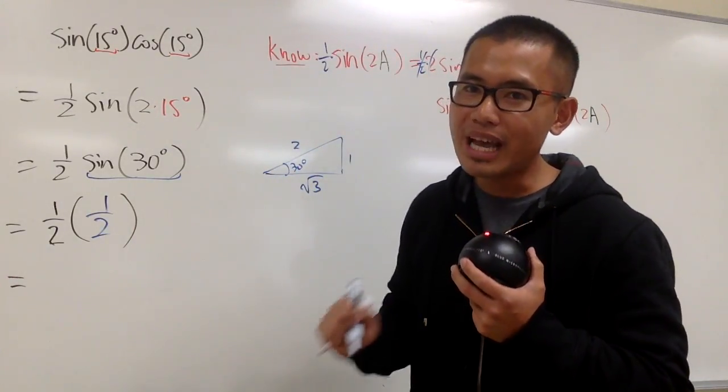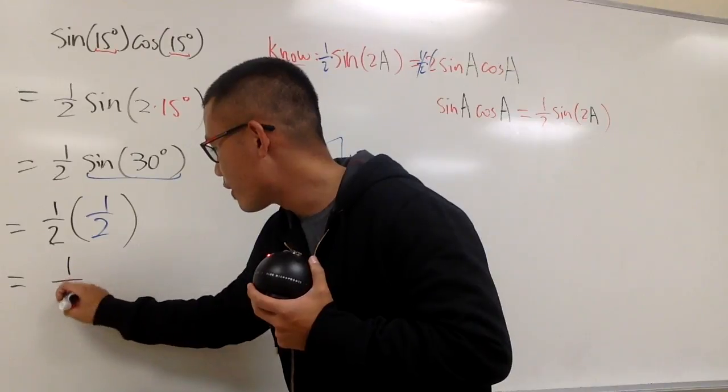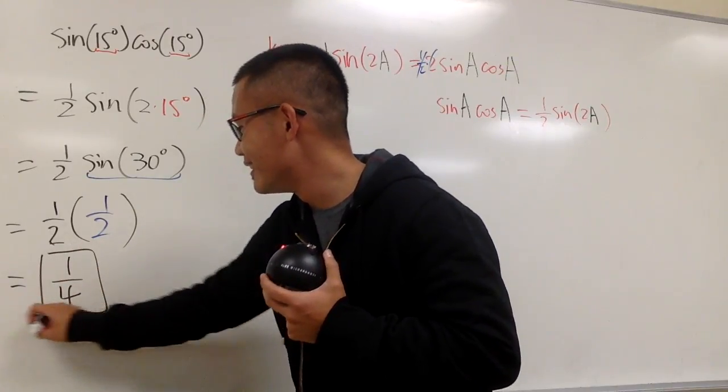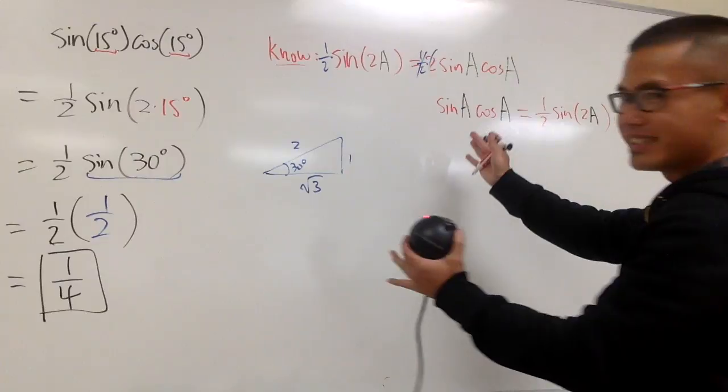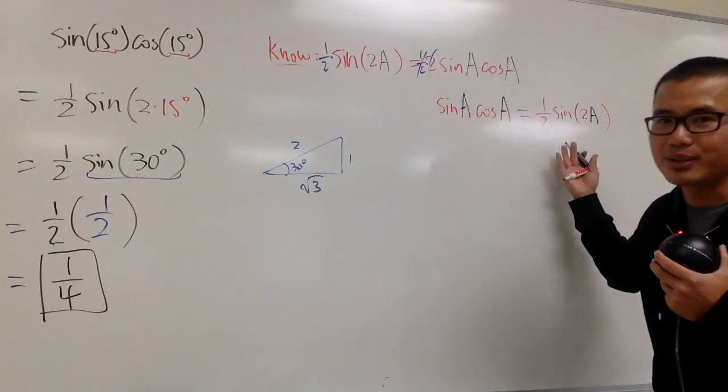At the end, 1 half times 1 half, we get 1 over 4, and this is it. So much easier, isn't it? That's it. Double angle formula, another look.